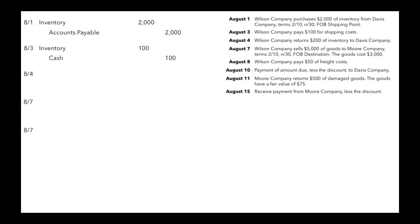On August 4th, Wilson Company returns $200 of inventory to Davis Company. If you return inventory, you no longer owe as much money, so we need to debit accounts payable to decrease that liability. We credit inventory because we now have less inventory in our warehouse — debit and credit for $200.